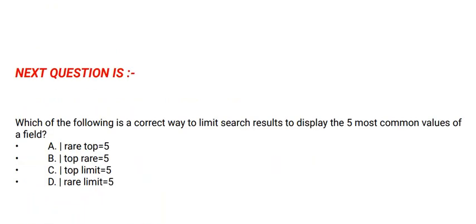Next question: which of the following is a correct way to limit search results to display the five most common values of a field? Option A: rare top=5. Option B: top rare=5. Option C: top limit=5. Option D: rare limit=5. The correct option is option C.